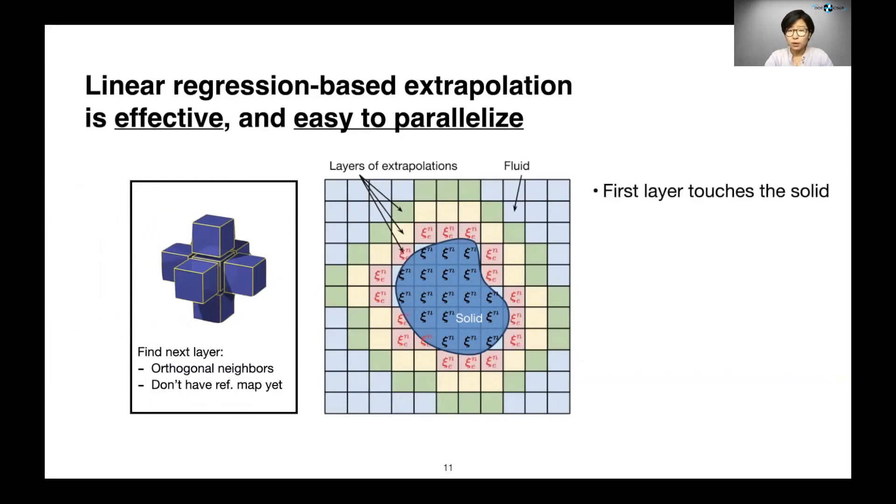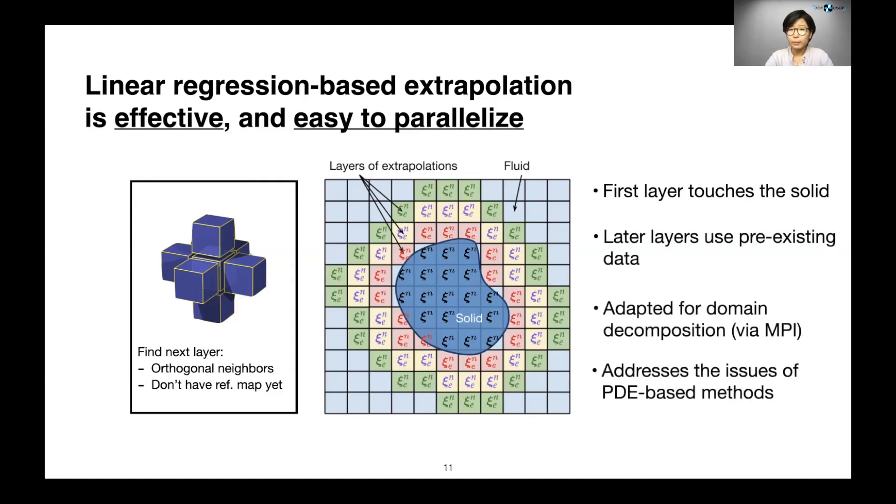For each red cell in the first layer, we find existing reference map variables in a small neighborhood around it and use linear regression to build a linear model and then extrapolate to the values at that grid point. We repeat this process until we fill up the transition zone and have enough data points to carry out our differentiation operators.